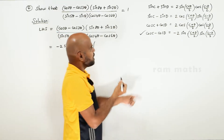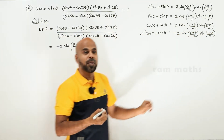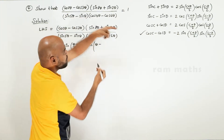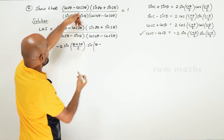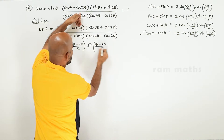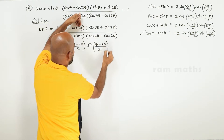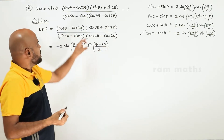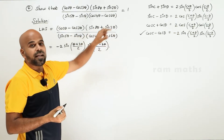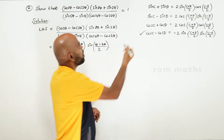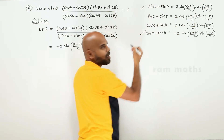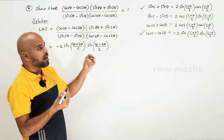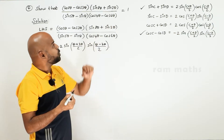Sine C minus D by 2, with C as theta and D as 3 theta by 2. Next, into sin C plus sin D. Here C is substituted as a theta and D as 2 theta.